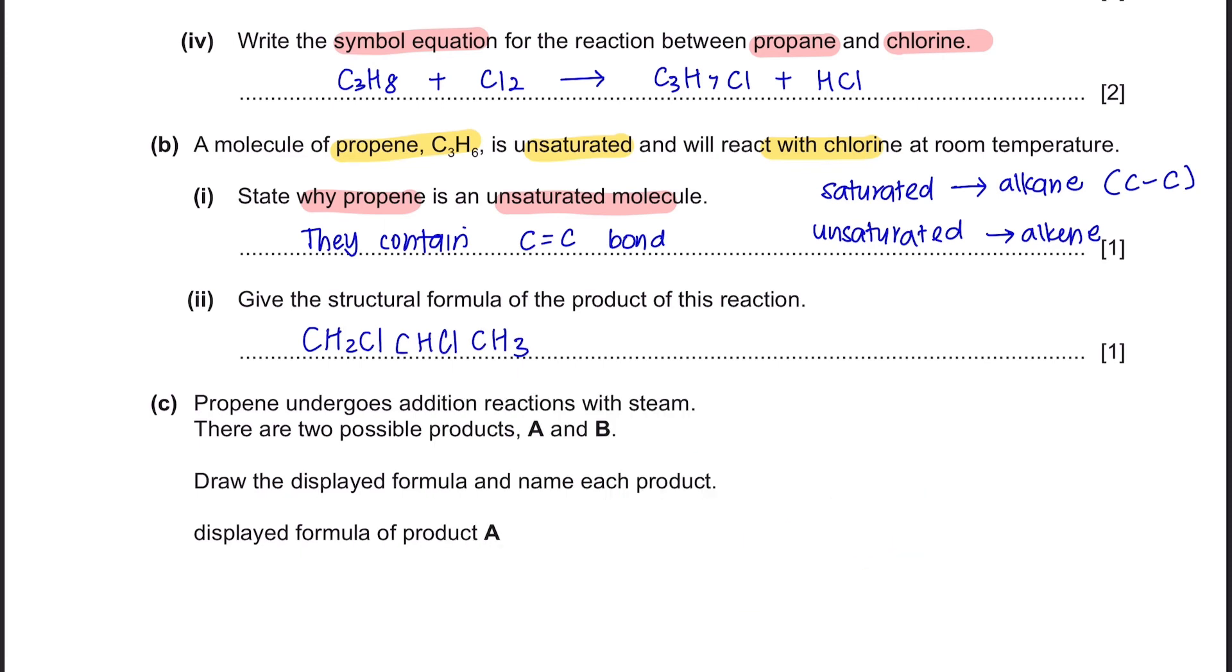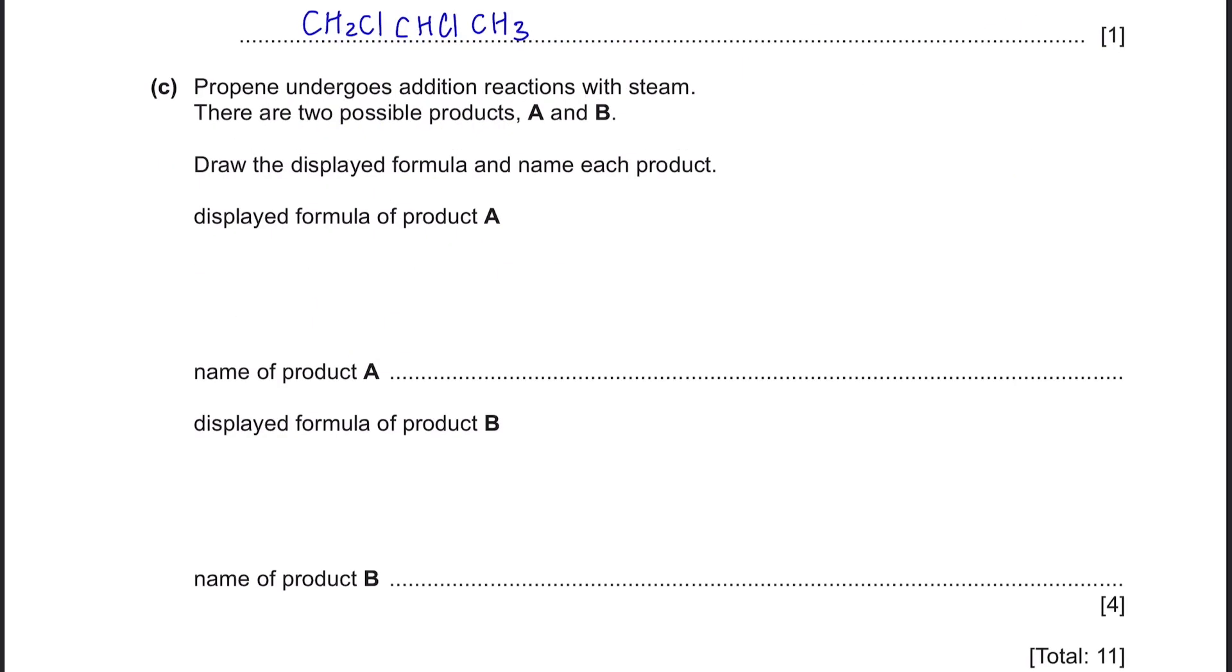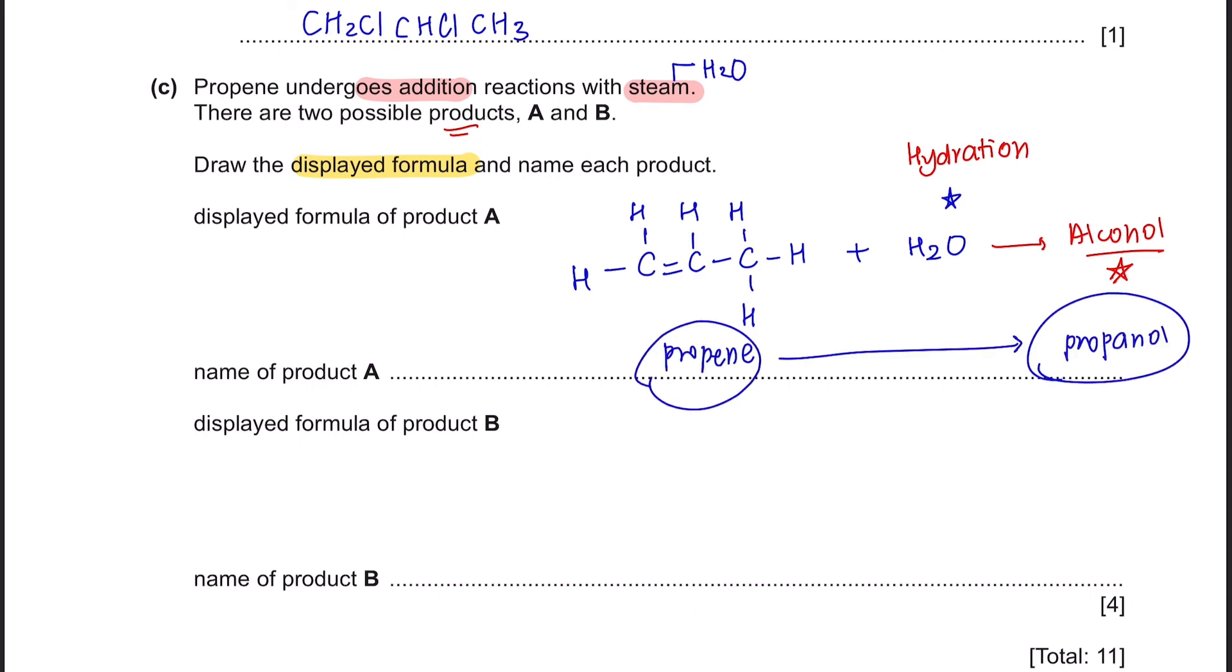Question C: Propene undergoes addition reactions with steam. There are two possible products A and B. Draw the displayed formula and name each product. When alkene reacts with steam, which is water, we refer to this reaction as hydration, whereby the product here would be alcohol. But it mentions here that there are two possible products, meaning that they want you to display the isomer for this alcohol. Now, propene will form propanol.